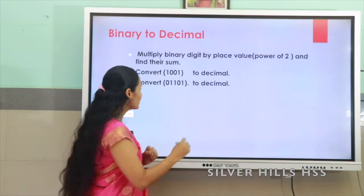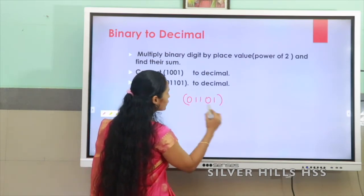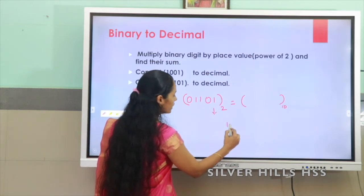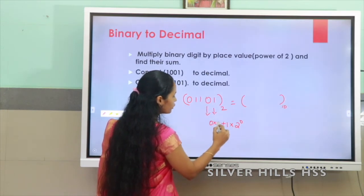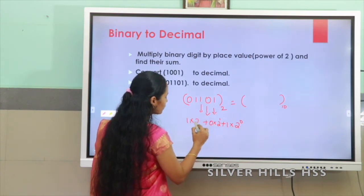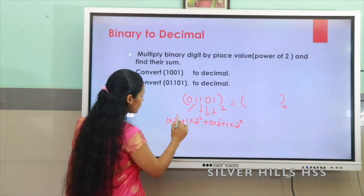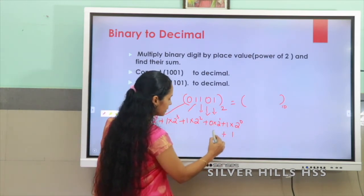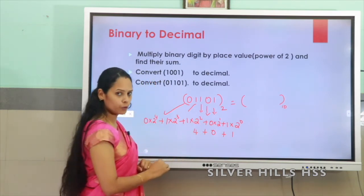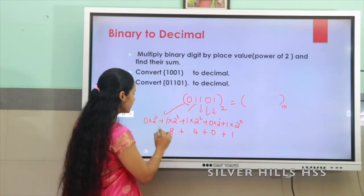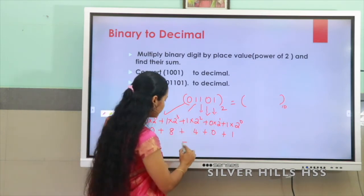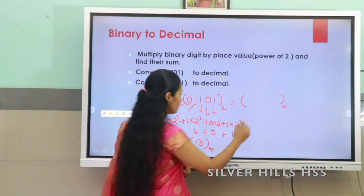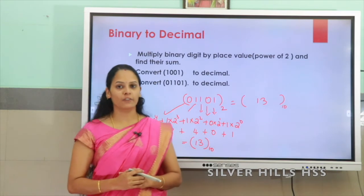Let us take the next example. The second number is 01101 base 2 and we want to convert this into base 10. We write it as: 1 × 2⁰ + 0 × 2¹ + 1 × 2² + 1 × 2³ + 0 × 2⁴. Solving: 1 + 0 + 4 + 8 + 0 = 13 base 10. So 01101 base 2 equals 13 base 10. This is the way to convert a binary number to decimal.